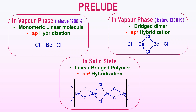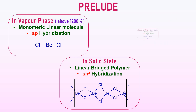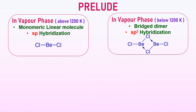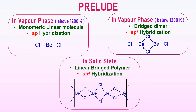Beryllium chloride is an electron-deficient compound and exhibits polymerization, resulting in different structural configurations as shown on the screen. In the vapor phase, it exists entirely as a monomeric linear molecule above 1200 K. However, it undergoes dimerization below 1200 K, and upon further cooling, polymerization continues by forming a linear polymeric structure in the solid state. These transitions are accompanied by a change in hybridization of beryllium from SP to SP2 and finally to SP3. Now let us explore these structural patterns in greater detail.